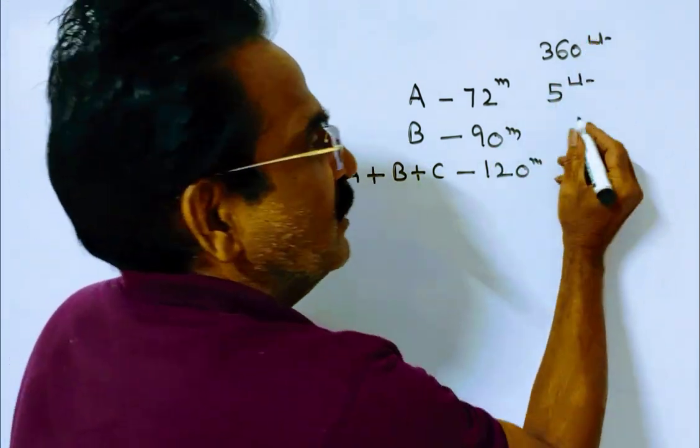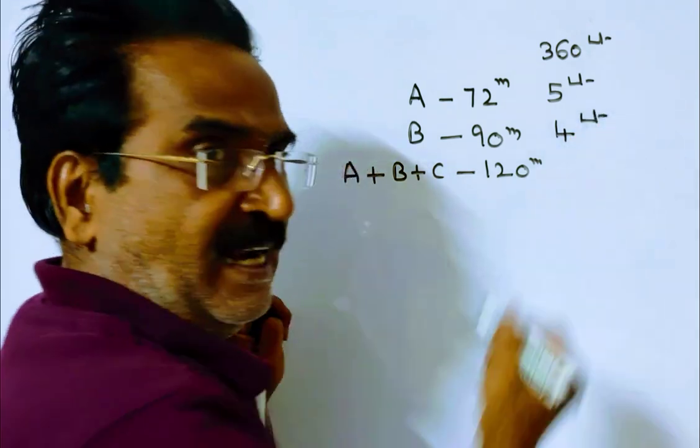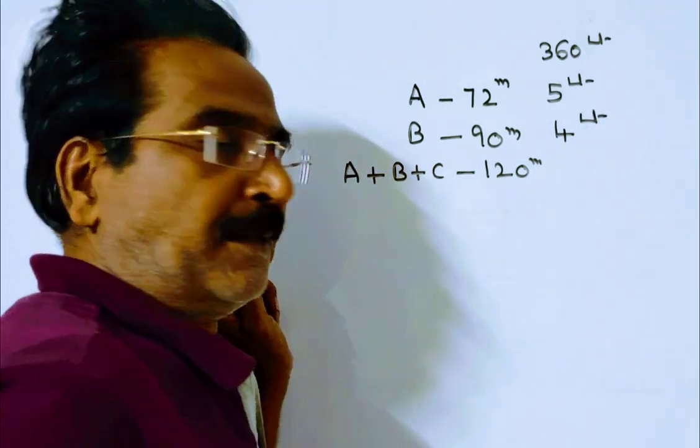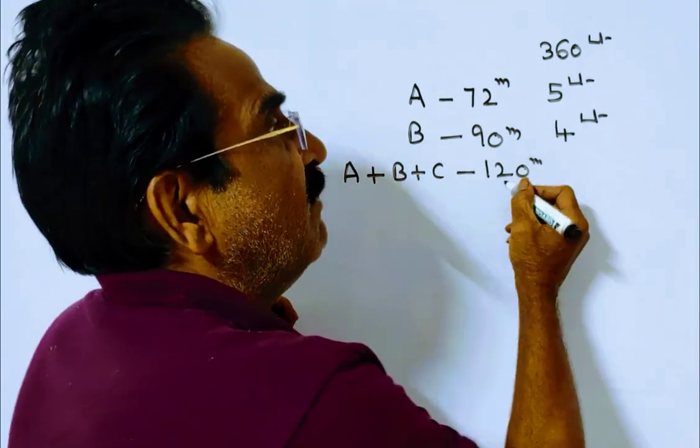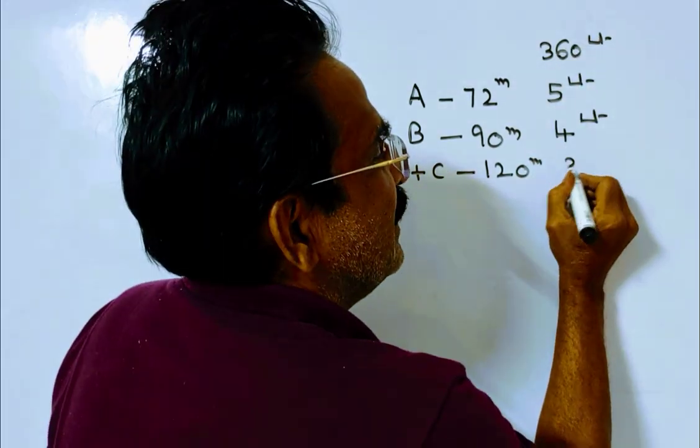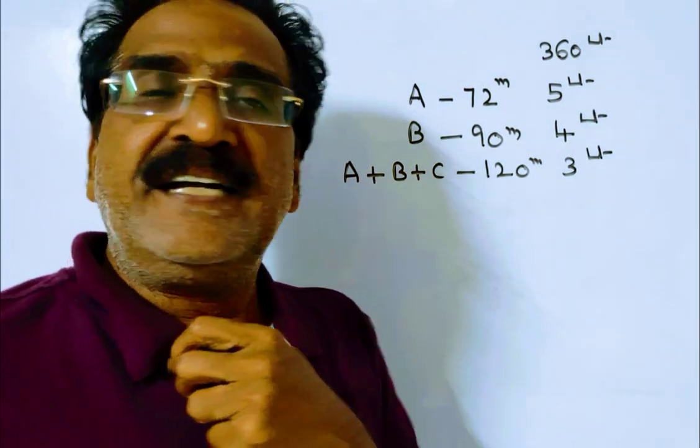Pipe B can fill 4 liters of water per minute. And A plus B plus C together can fill 3 liters per minute.